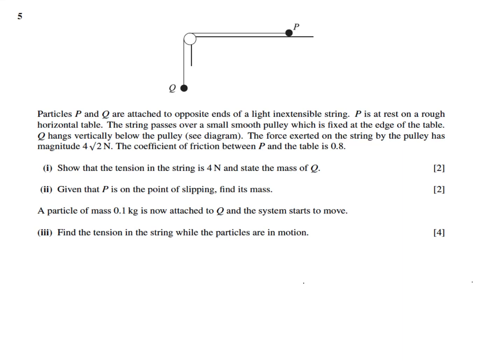Particles P and Q are attached to opposite ends of a light inextensible string. P is at rest on a rough horizontal table. The string passes over a small smooth pulley fixed at the edge of the table, and Q hangs vertically below the pulley.